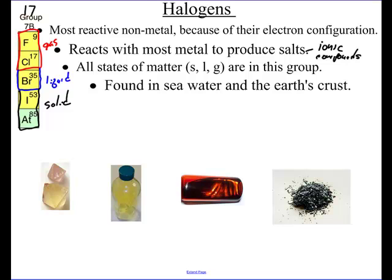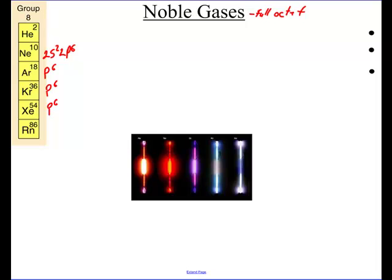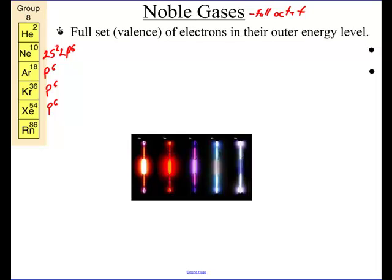Last but not least, the noble gases. The reason they're called noble gases is because they have a full octet. For example, neon's electron configuration is 2S2, 2P6. All noble gases end in P6, which is a very stable electron configuration. They have a full set of valence electrons in their outer energy level, which makes them extremely stable.